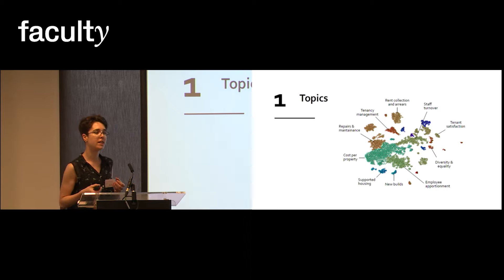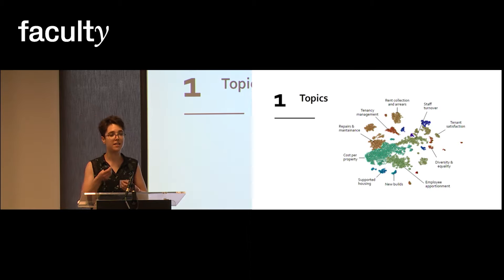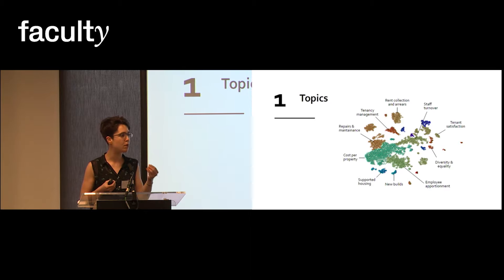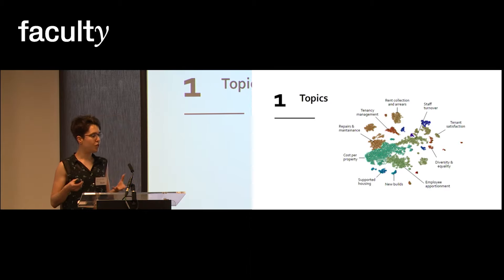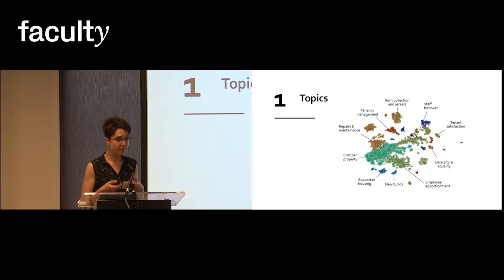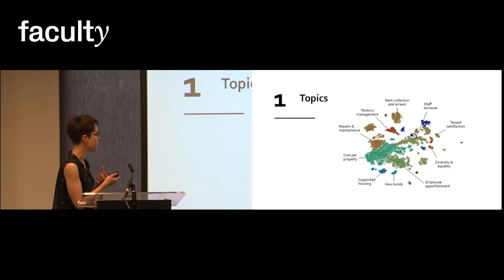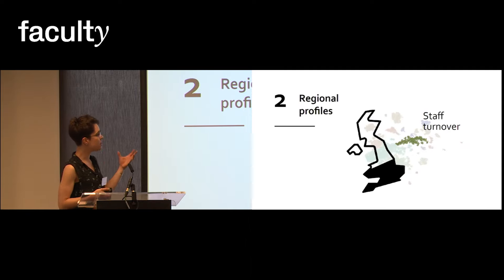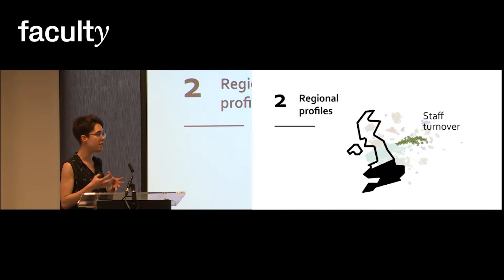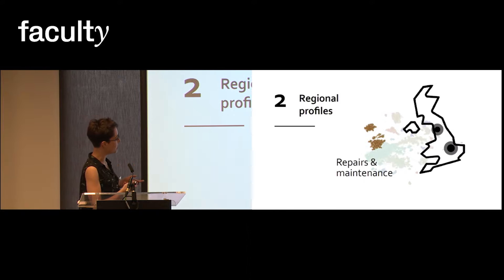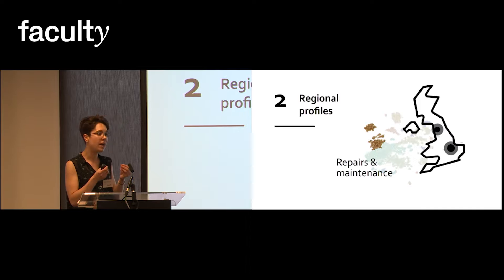On top of this model, I then projected the features that distinguish and characterize the different types of housing providers that Housemarque works with — features like the number of properties they manage or their geographic distribution. This reveals new interesting patterns: for instance, discussions about staff turnover seem to concentrate among housing providers across the south of England, while discussions about repairs and maintenance are localized in certain areas like London or the Northwest.